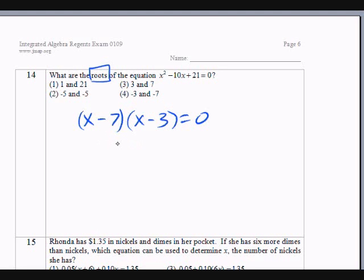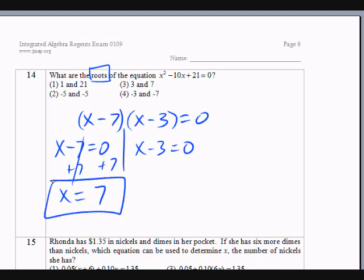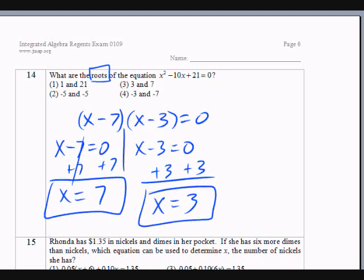We need a 0 either on the left side, x minus 7 equals 0, or x minus 3 equals 0. So we add 7 on both sides. You get x equals positive 7. That is one solution or one root. You add 3 on the other side, and you get x equals 3. That is the other root. Look at the choices. Choice 3, there you go. You got it.